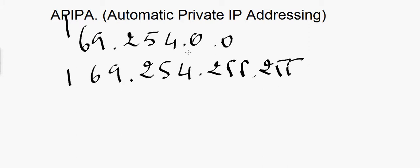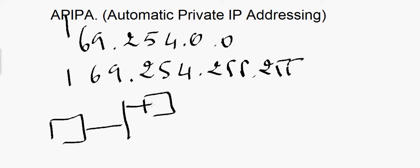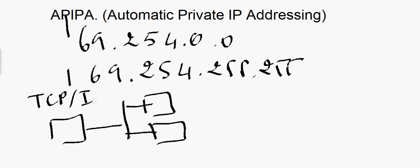APIPA is very simple. You have a computer connected to a network with other computers and servers. When using the TCP/IP protocol stack, every computer or node on the network must have an IP address. A computer without an IP address cannot establish any communication, so with TCP/IP, an IP address is a must.